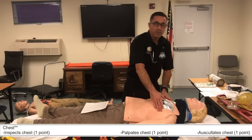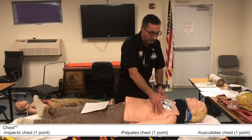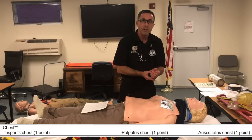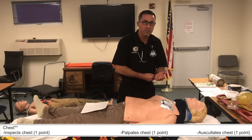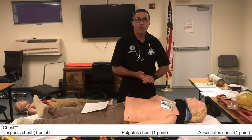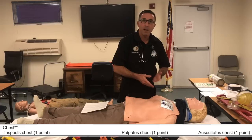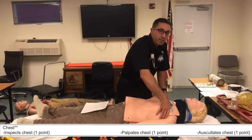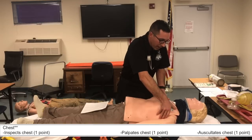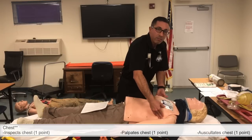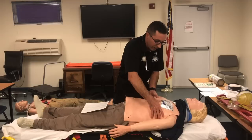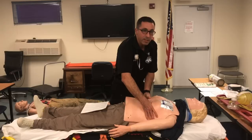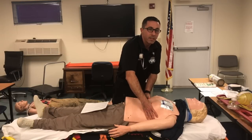Next, check the patient's shoulders and clavicles for DCAP-BTLS and crepitation. If your patient hasn't been exposed already, make sure you do so while you're here. Then assess the chest — inspect it first, looking for equal bilateral rise and fall, any bullet holes, and DCAP-BTLS and crepitation. Then palpate the front of the chest, around the ribcage and sides.